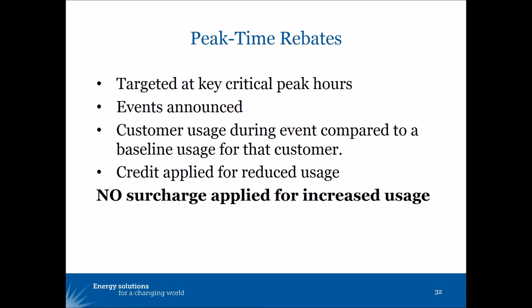That baseline is the utility's estimate of what the customer would normally use during that critical peak event if they didn't know it existed and were just behaving as they normally do. If the customer's energy usage during the actual critical peak goes below that baseline, they receive a credit or rebate on their bill for reduced usage.